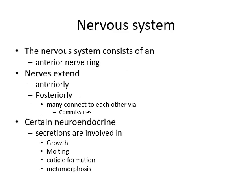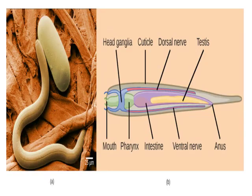The nervous system consists of an anterior nerve ring, and nerves extend anteriorly and posteriorly along the length of the nematode, and may connect to each other via commissures. Just like platyhelminths, certain neuroendocrine secretions are involved in growth, molting, cuticle formation, and metamorphosis in nematodes. Here you can see a diagram of the nematode showing the mouth, head ganglion, pharynx, intestine, anus, and the neuronal system includes ganglia, dorsal nerve, and ventral nerve along the length of the animal.